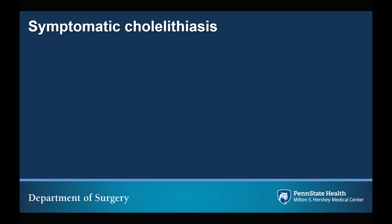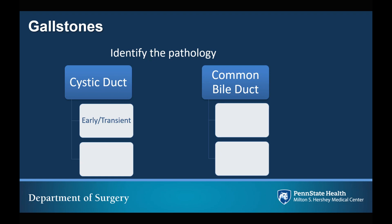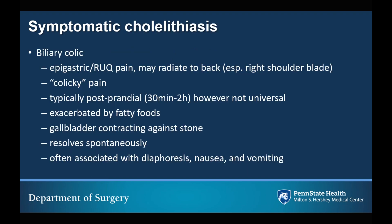Symptomatic cholelithiasis is early or transient obstruction of the cystic duct and results in what is called biliary colic. This is epigastric or right upper quadrant abdominal pain, which may radiate to the back — in particular the right shoulder blade. This is colicky pain, also known as cramping type pain. It typically occurs postprandially at about 30 minutes to 2 hours after eating, however this is not a universal finding.